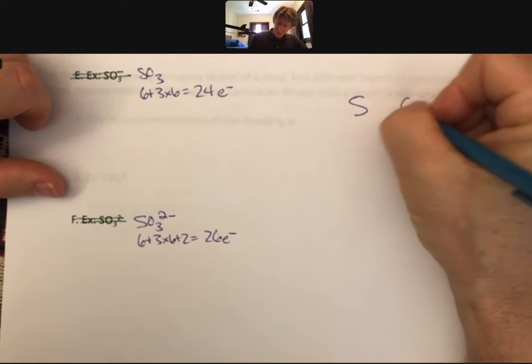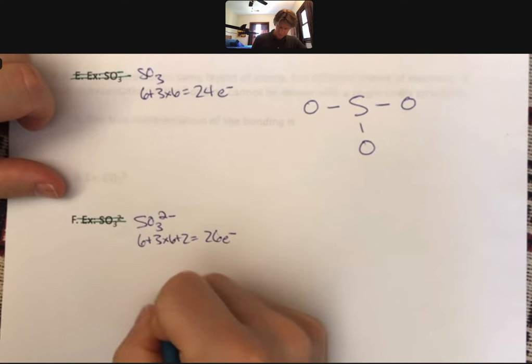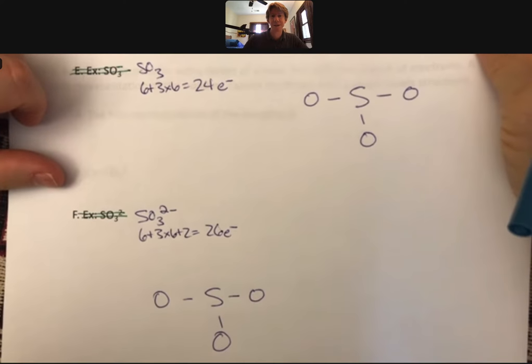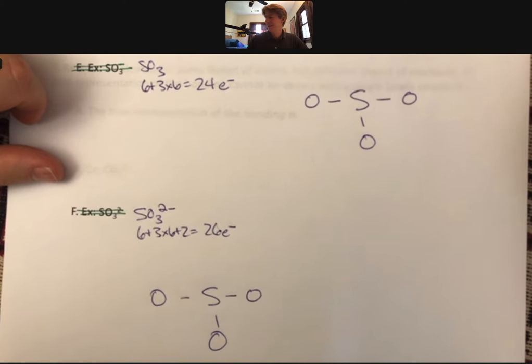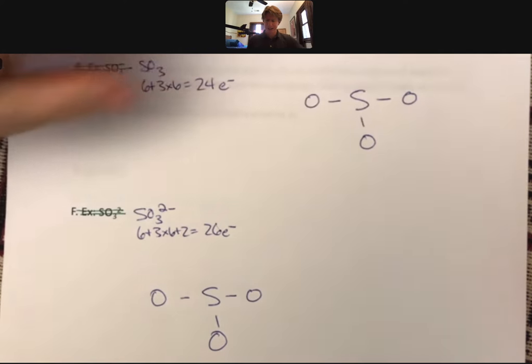Put the sulfur in the middle, surround it with the oxygens. Put the sulfur in the middle, surround it with the oxygens. I guess we'll just do these both at the same time so we can see the differences. Now sprinkle your electrons around the outside atoms.